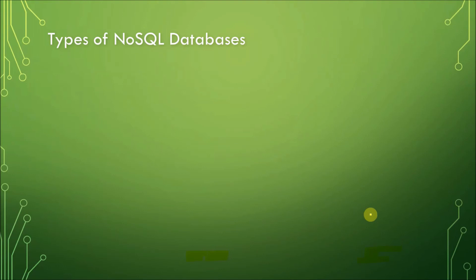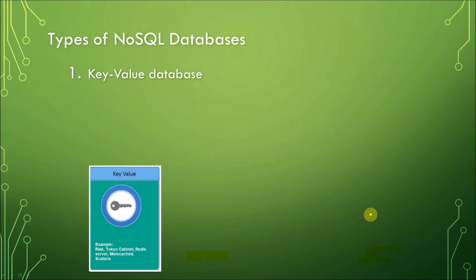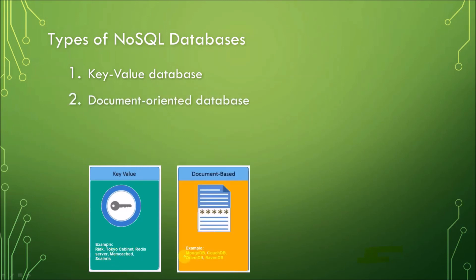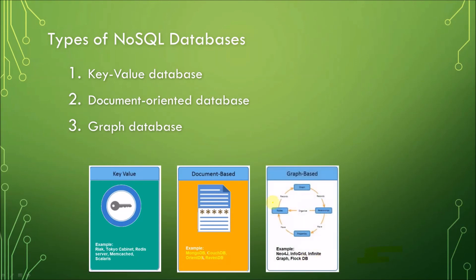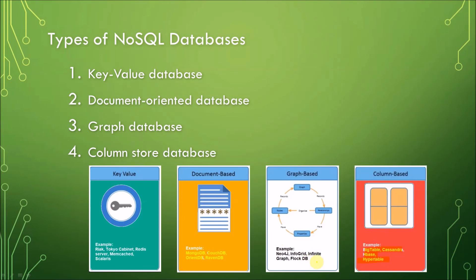There are four types of NoSQL databases. The first is key-value database, with examples such as Redis, Tokyo Cabinet, Memcache, and Scalaris. For document-oriented databases, we have MongoDB, CouchDB, OrientDB, and RavenDB. For graph databases, data is structured as a graph where one thing is associated with another. Examples include Neo4j, InfoGrid, InfiniteGraph, and FlockDB. And lastly, column-store databases, with examples such as Bigtable, Cassandra, HBase, and HyperTables.